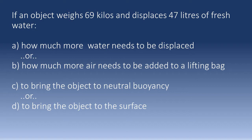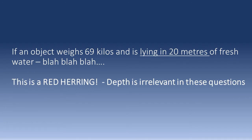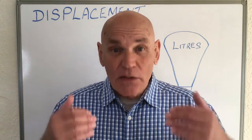You've probably come across all of these permutations already. The good news, especially with (a) and (b), is that they're both in liters - whether it's liters of water or liters of air, they all belong on the liters team, so the answer isn't affected. Another variation: 'If a diver weighs 69 kilos and is neutrally buoyant in fresh water, how much water does he or she displace?' The answer is 69 liters. And if an object weighs 69 kilos and is lying in 20 meters of fresh water - the depth is a red herring. Depth is not important at all; you can ignore it in displacement questions.